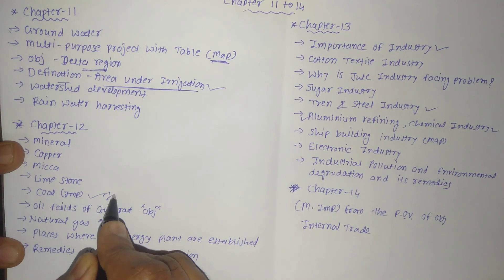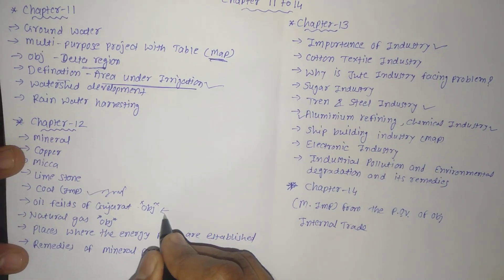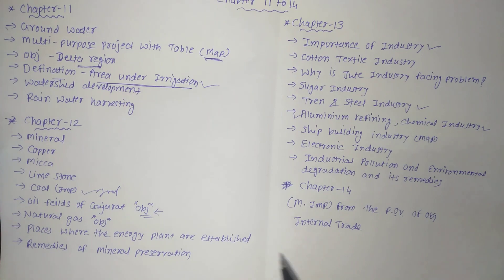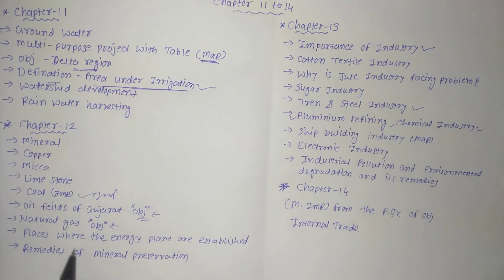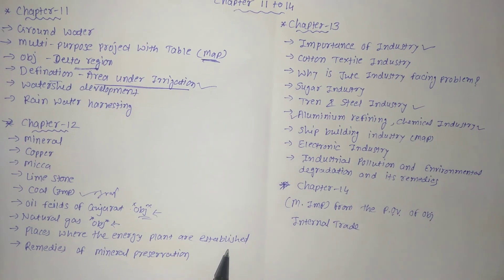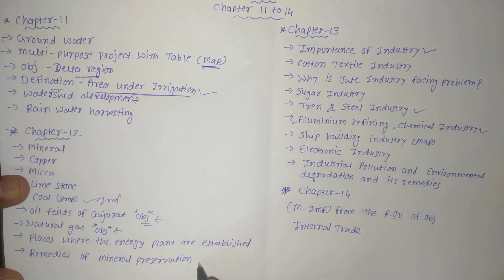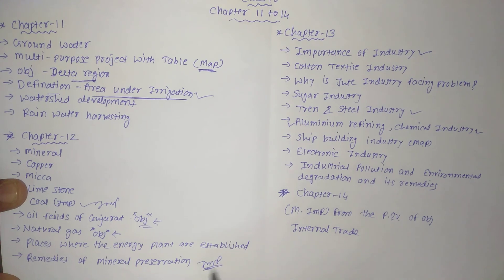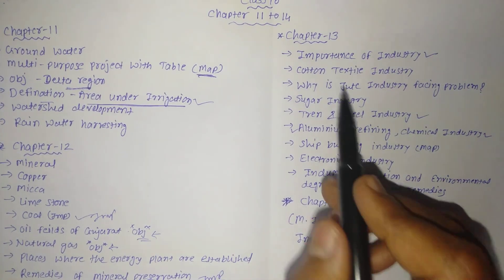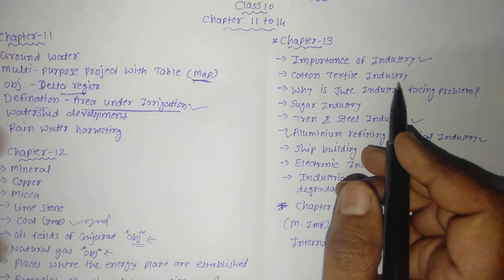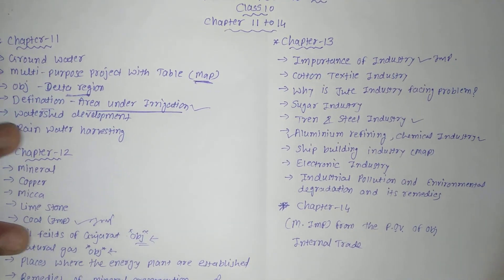Chapter 12: minerals — copper, mica, limestone, coal — this is very important. Coal oil fields of Gujarat can be asked in objective type questions. Natural gas can be asked in objective type questions. Places where energy plants are established, and remedies of mineral preservation — this is the most important question from this chapter.